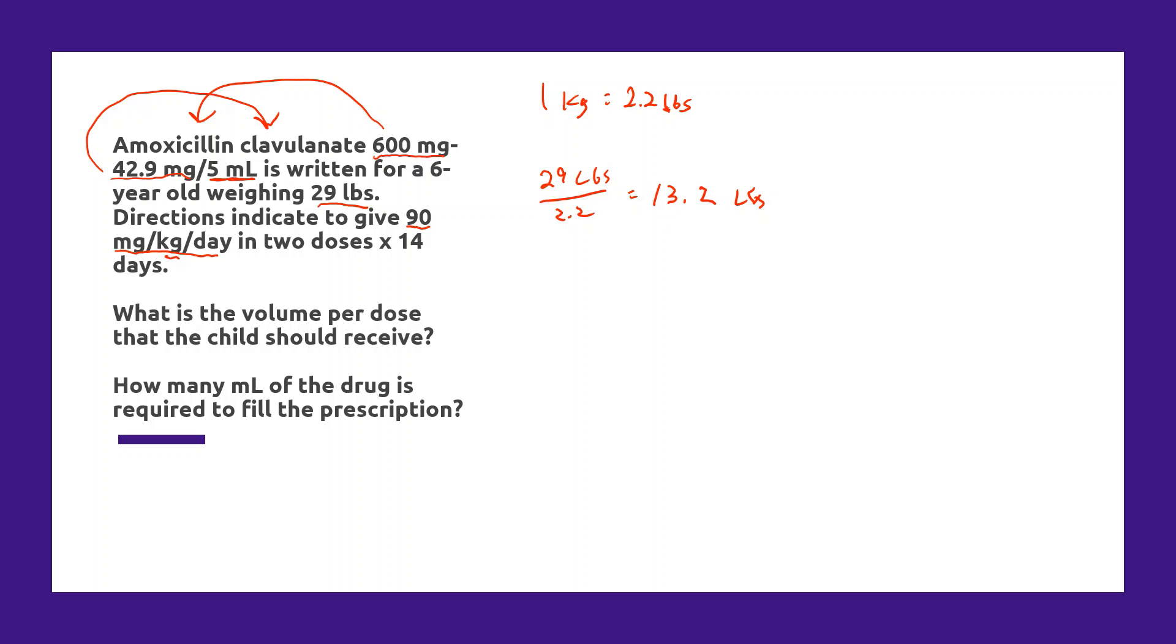To calculate the volume per dose that the child should receive, we need to figure out what the dose is in milligrams for the child per dose. They're giving us a dose as milligrams per kilogram per day divided into two doses. You have to be very careful with your units when you're looking at these exam questions. To figure out how many total milligrams per day for this child, we can set up a proportion and we want to know how many milligrams per 13.2 kilograms is equivalent to 90 milligrams per one kilogram.